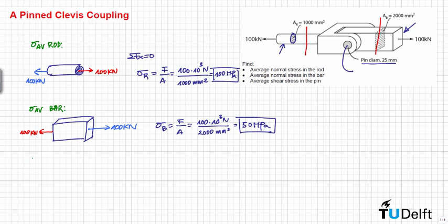And finally we can calculate the shear stress in the pin. We can consider first the forces acting on the pin, so this is the piece, and we have here 50 kN. We have here 50 kN as well, and we have here this point load of 100 kN.